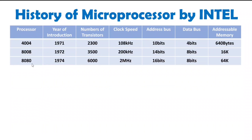After that, the 8080 processor came in 1974. There were 6,000 transistors integrated in that processor with a clock speed of 2 megahertz. There were 16 bits of address and 8 bits of data. With 16 bits of address, it could address 64K of memory.